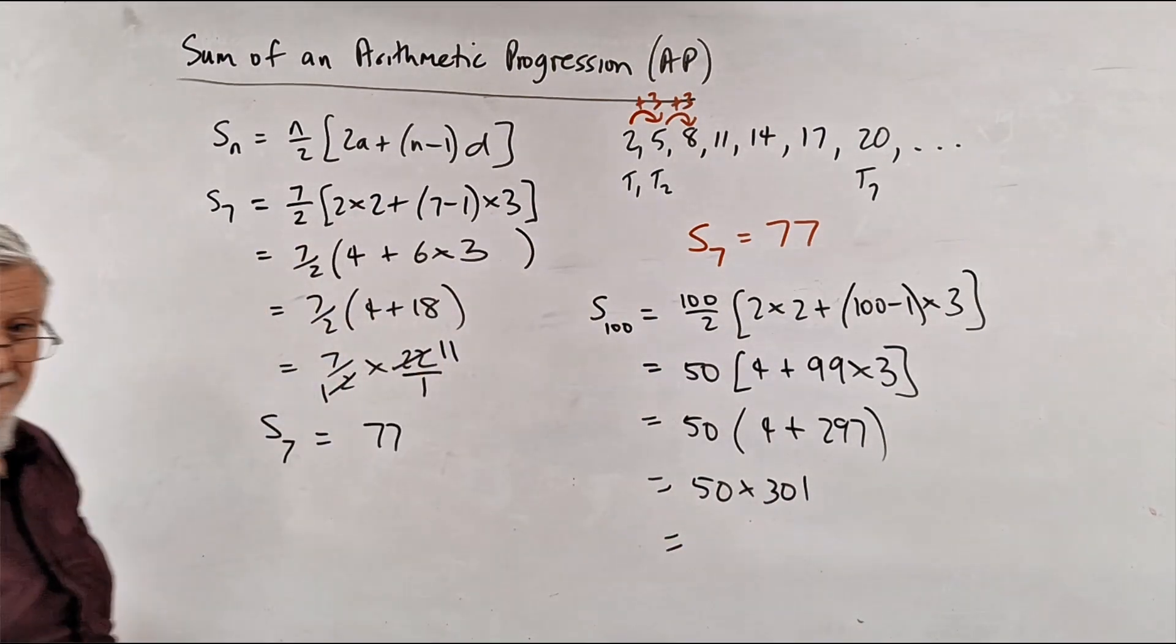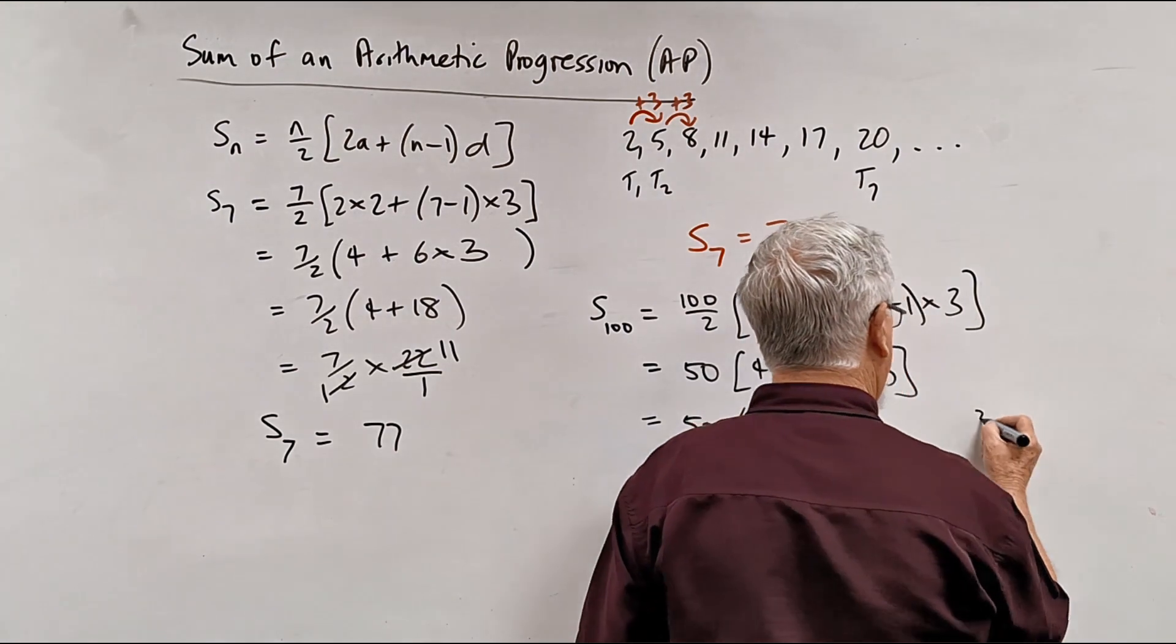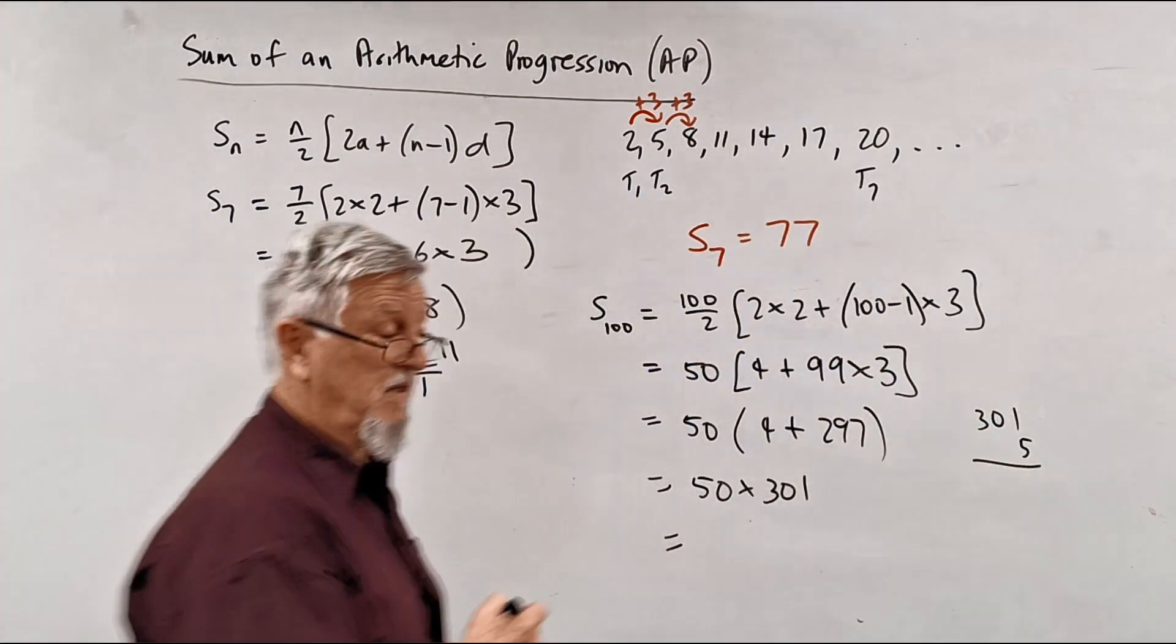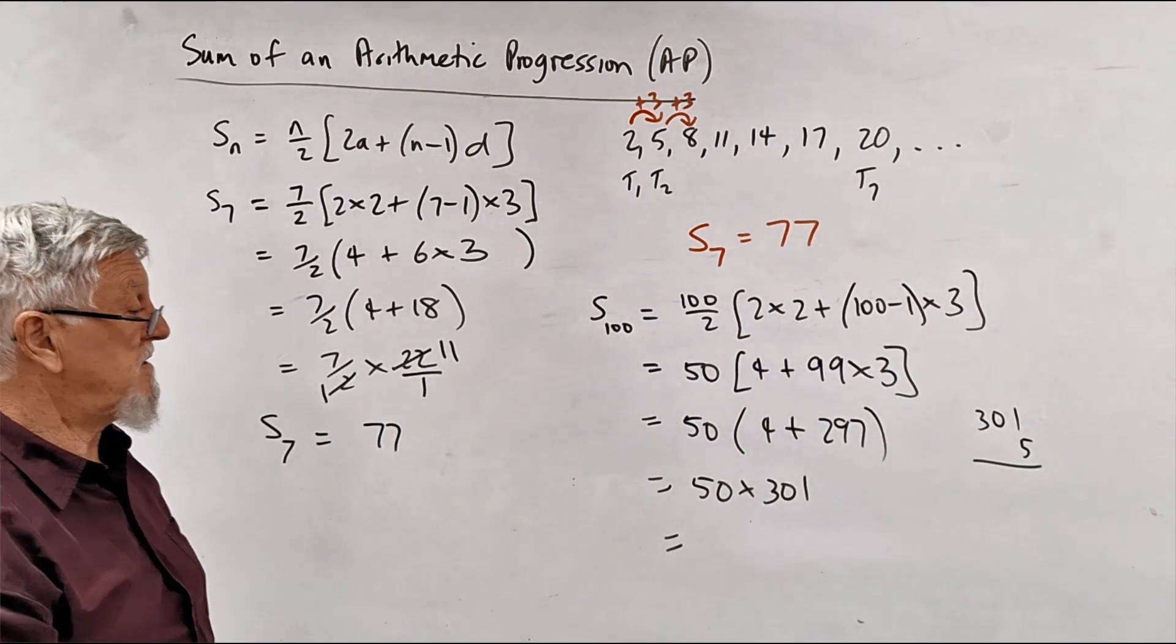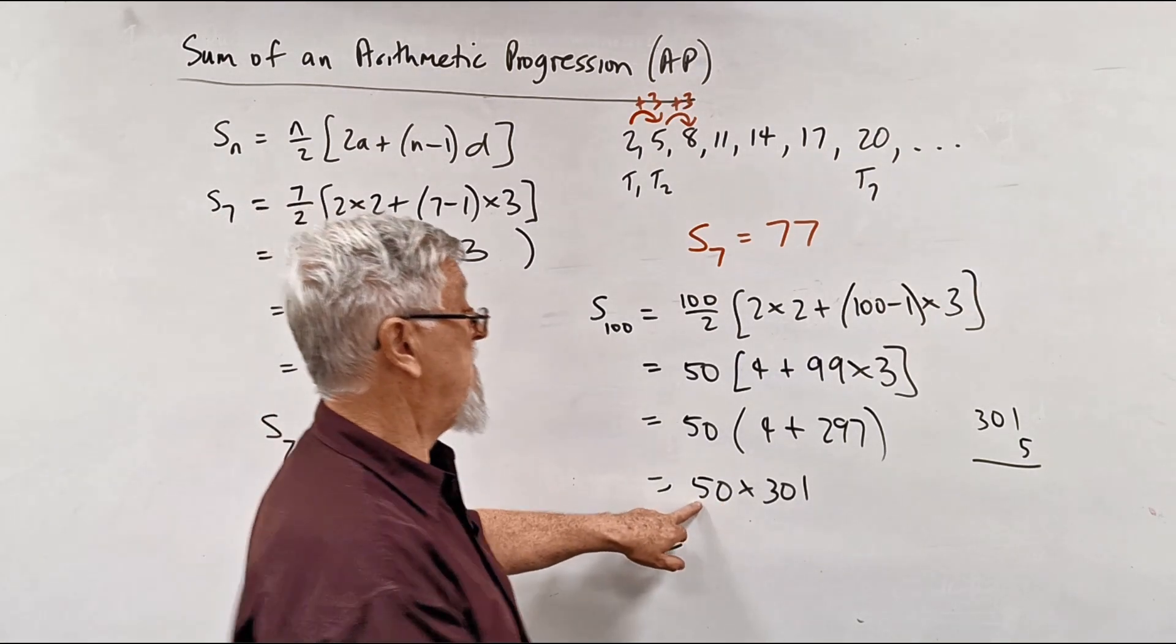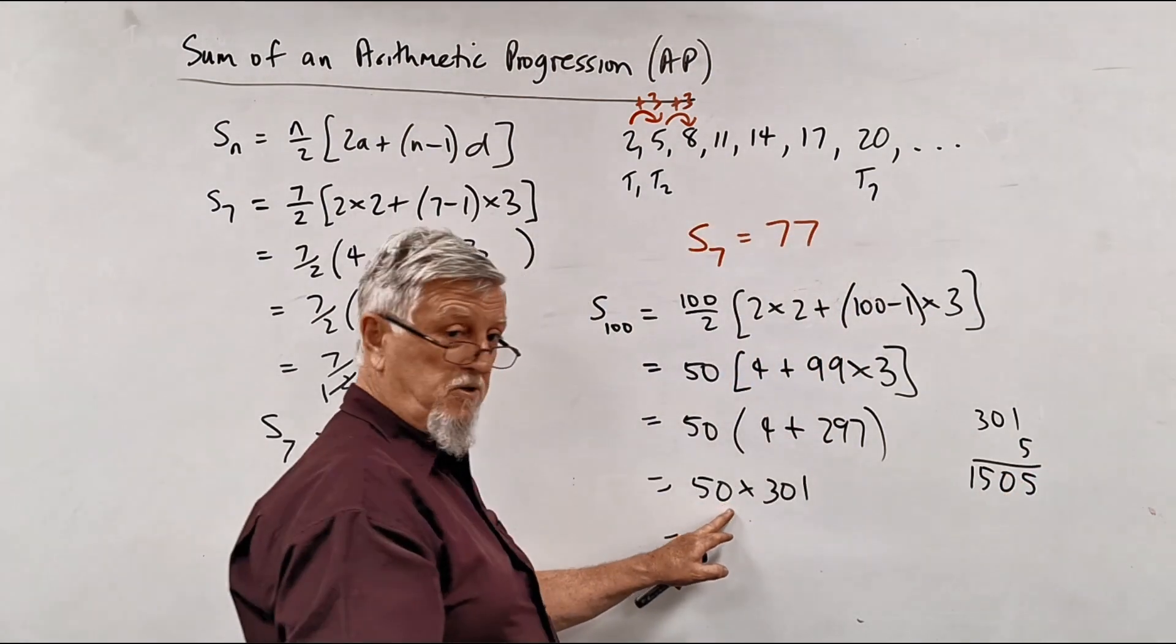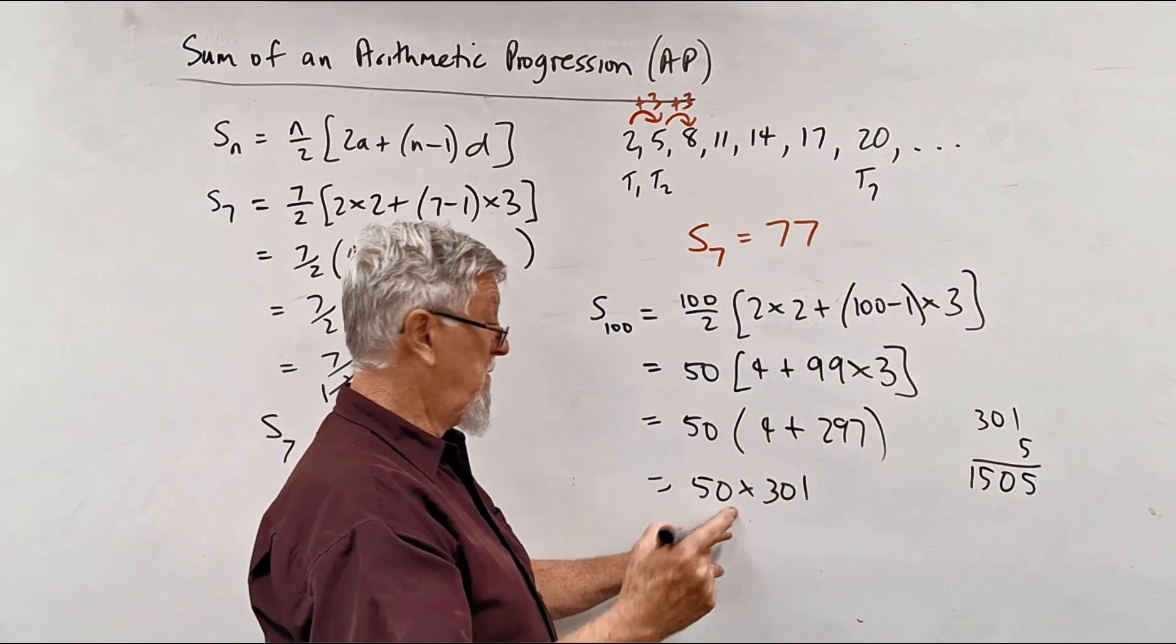And I wonder if I can do that in my head, or I can just go 5 times 301. So if you did have this in a non-calculated section, I'm going to ignore the 50, I'm just going to go 5. 5 times 1 is 5, 5 times 0 is 0, 5 times 3 is 15, and I've got an extra 0, which means multiply by 10.